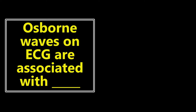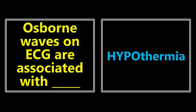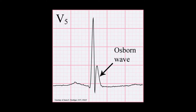Osborne waves on EKG are associated with what? If you see Osborne waves mentioned, you want to be thinking hypothermia. These Osborne waves are also known as J waves. They're a deflection right at the J point. We can see an Osborne wave right here at the J point — a positive deflection that can be indicative of hypothermia, but is not pathognomonic for hypothermia. It is very important to know that.